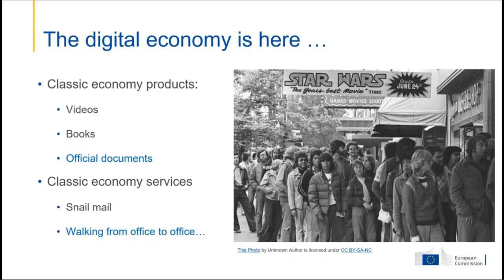Let's see the difference between what we are already used to and what we used to be used to. We used to wait in line for cinema tickets to see the latest movie, because in the classic economy, products were analog or were not available through online means. E-government official documents were just on paper, and classical services were received via snail mail — walking from office to office, getting the right form. It was maybe good for our health, but it took a lot of time.